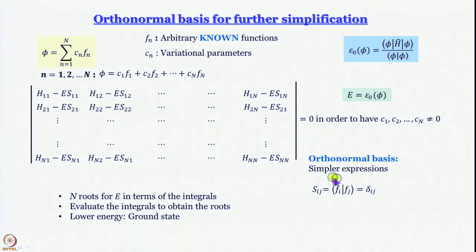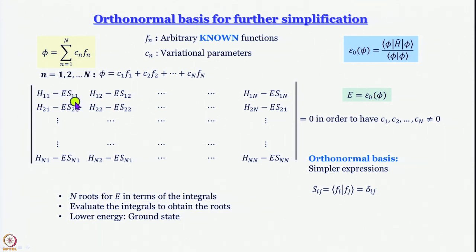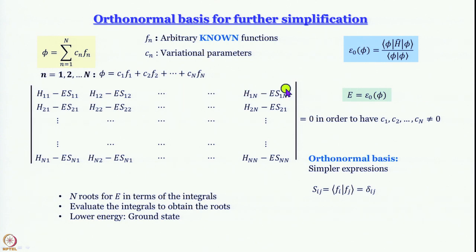Since the functions belong to an orthonormal set, they are normalized, and if i ≠ j the integral S_ij becomes 0. So what happens to the determinant? The diagonal element H_11 - E·S_11 becomes H_11 - E since S_11 = 1. The off-diagonal term S_12 becomes 0, so that term vanishes completely. You are left with only H_12, and this pattern holds for all elements: all S_1n terms also become 0.